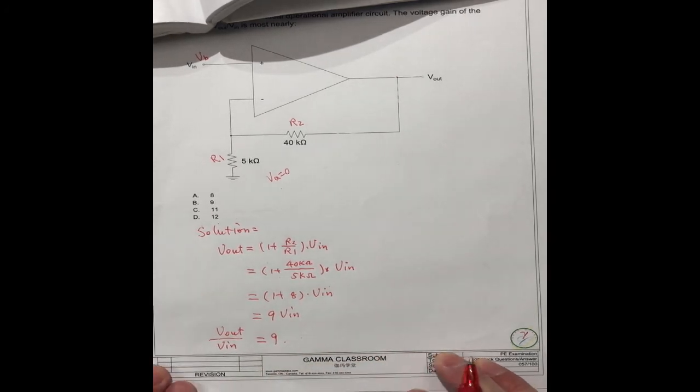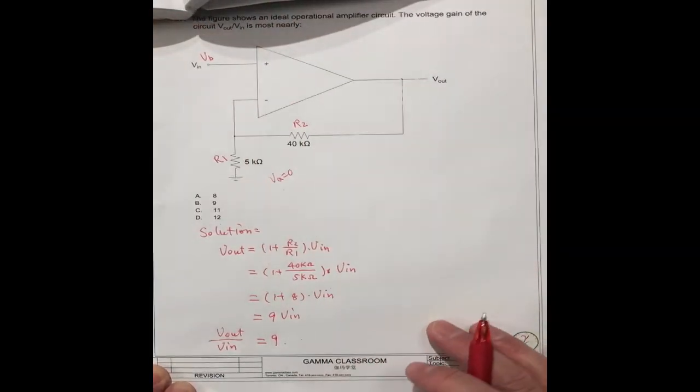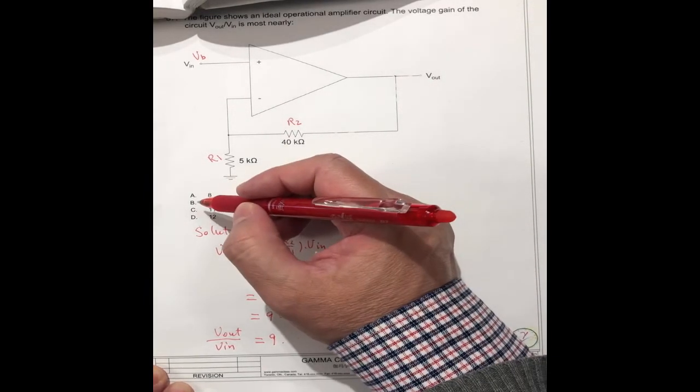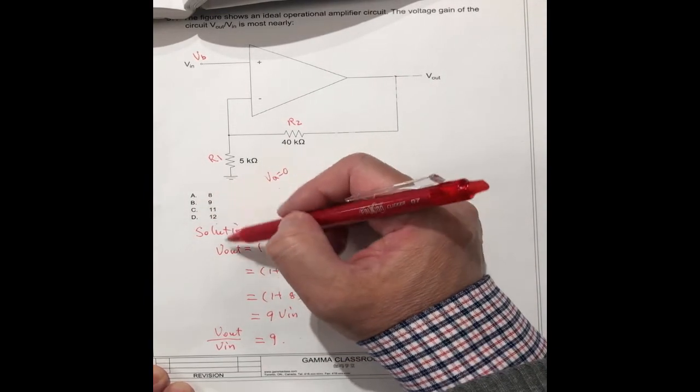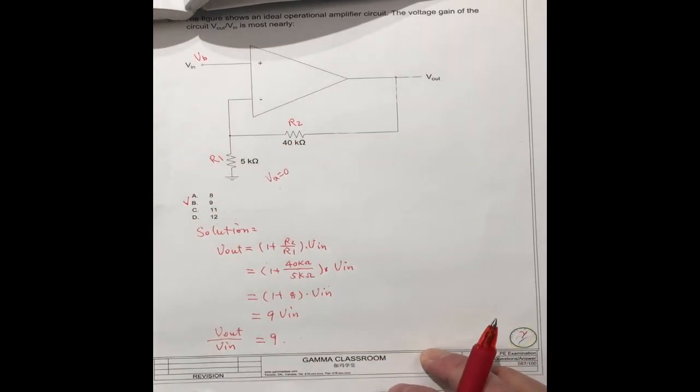So if we know the concept, this is very simple calculation. So the correct answer should be 9. It should be B. B is the correct answer.